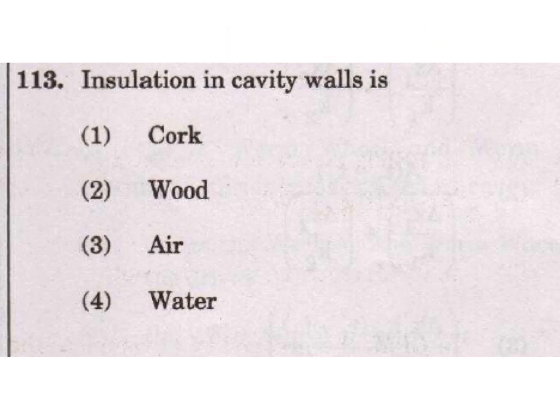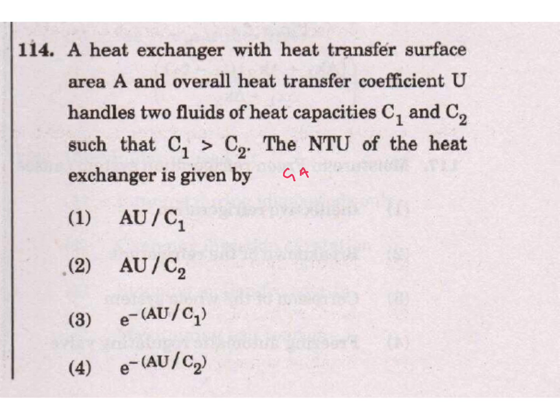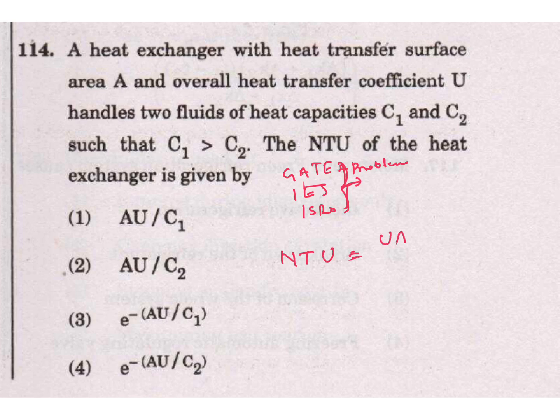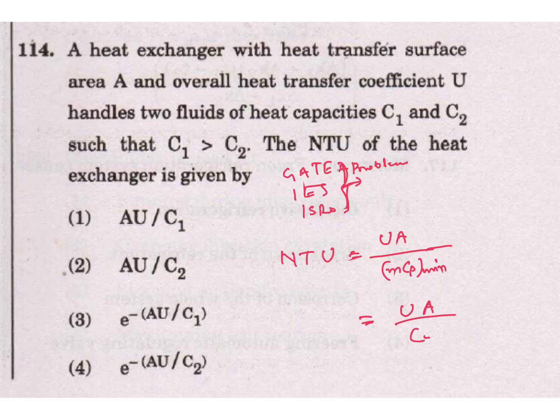Question: Insulation in cavity walls. Sometimes GATE also asks this question - some problems. And in IES also, ISRO also they are asking based on NTU formula. A heat exchanger with heat transfer surface area A and overall heat transfer coefficient U handles two fluids of heat capacity C1 and C2, so that C1 is greater than C2. The NTU of the heat exchanger is given by: NTU formula is U into A divided by MCP minimum, or MCP called as C1 or C2. So U A by C2 - 2 is our answer.